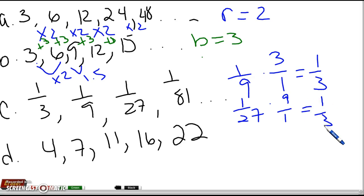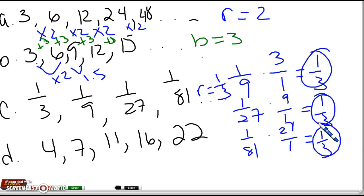And then again, I have 1/81 divided by 1/27, which is the same as times 27 over 1. And again, I get 1/3. So this is geometric. And my R is 1/3. Every time I got 1/3.